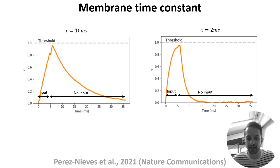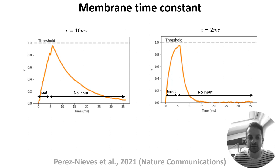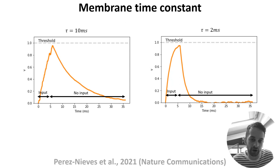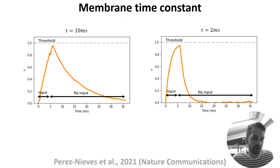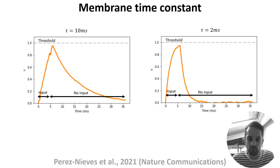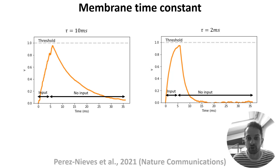While this and other details in this video may seem far from machine learning, using neural network models to explore what role these features play in computation, or using biological features to boost performance, are both really exciting prospects. For example, in the paper referenced here, Dan and colleagues built neural networks with heterogeneous membrane time constants and showed that this led to improvements in task performance. In the next video, we'll show you how to model single neurons mathematically, and that will provide a foundation for later in the course when we'll cover how to build and train networks made up of spiking units.